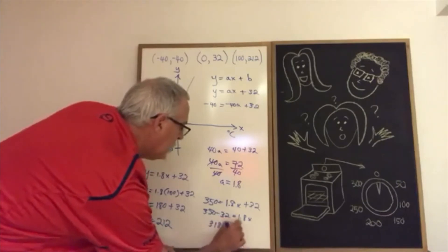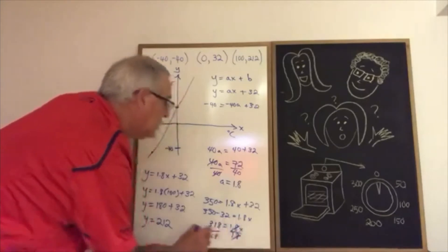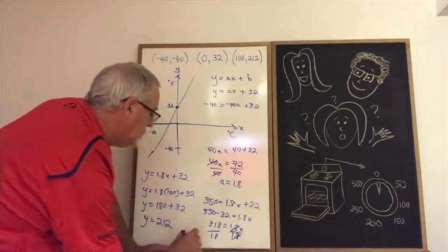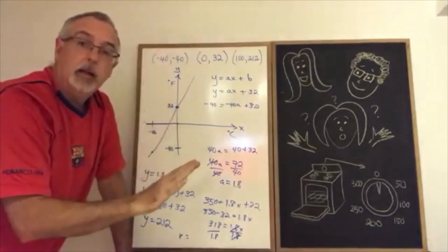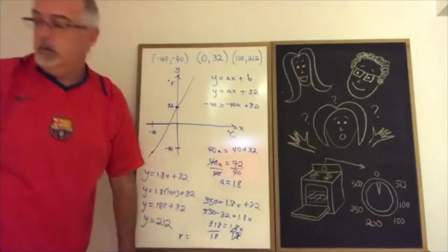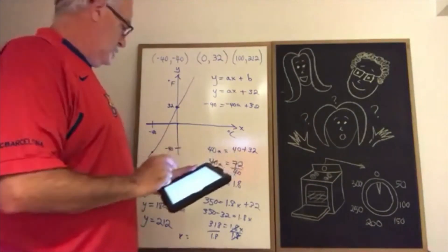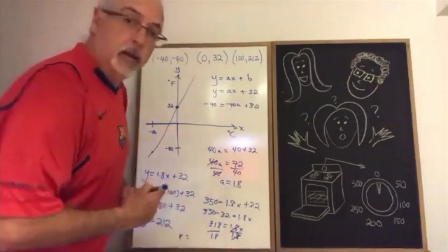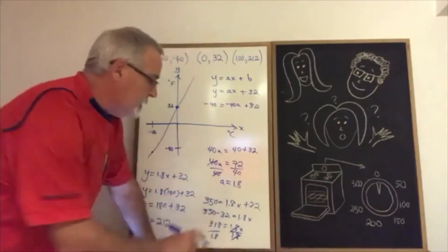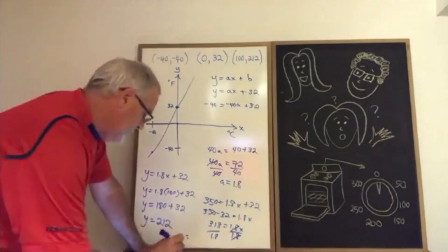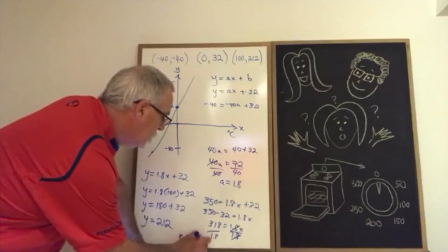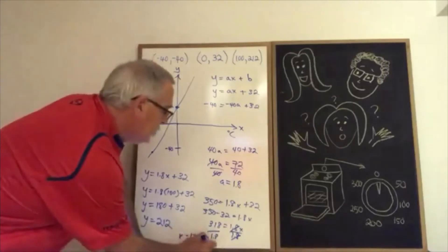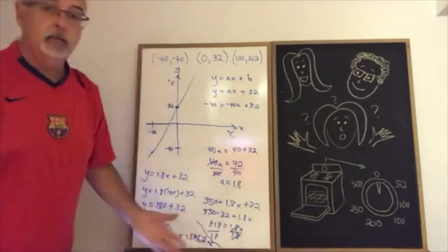318 equals 1.8x. I just have to divide both sides by 1.8. These cancel. Running out of space, but x is equal to whatever 318 divided by 1.8 is, so I will calculate that in my head really quickly and you just be patient while I do that. Okay, I calculated that in my head and it turns out 318 divided by 1.8 is 176.7 degrees Celsius.